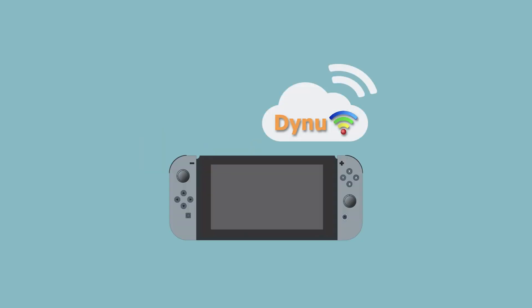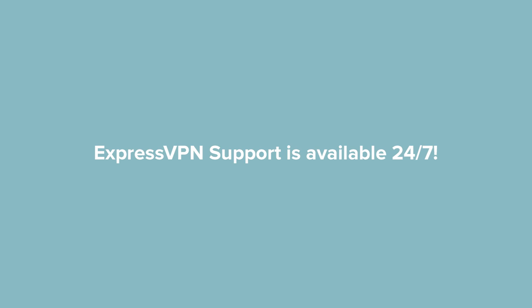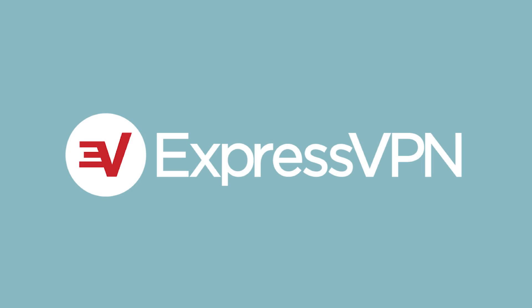Select OK. Congrats! You've configured the DNS settings on your Nintendo Switch. If you have any questions, ExpressVPN support is available 24-7. Thanks for watching.